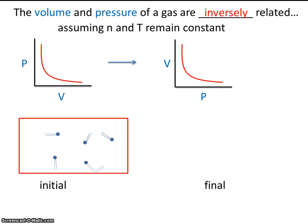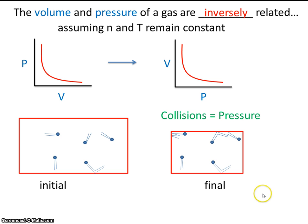Now what happens in the final conditions when we've decreased the volume of the container? By decreasing the volume, we get additional collisions. There's simply less area for these molecules to move around in, so they collide more often. Collisions create pressure. So as volume goes down, pressure goes up. That is Boyle's Law.